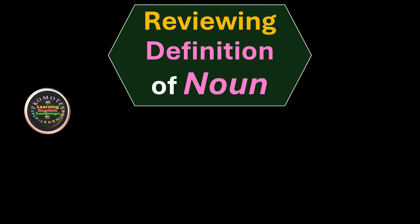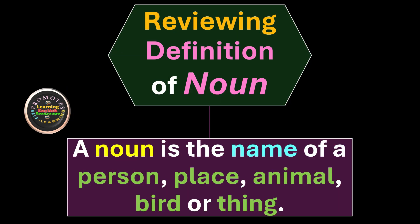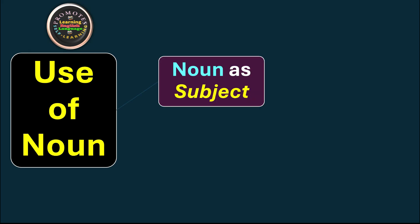What we come to review - the definition of noun is that a noun is the name of a person, place, animal, bird, or thing. Use of noun: we can use noun both as subject and as object.